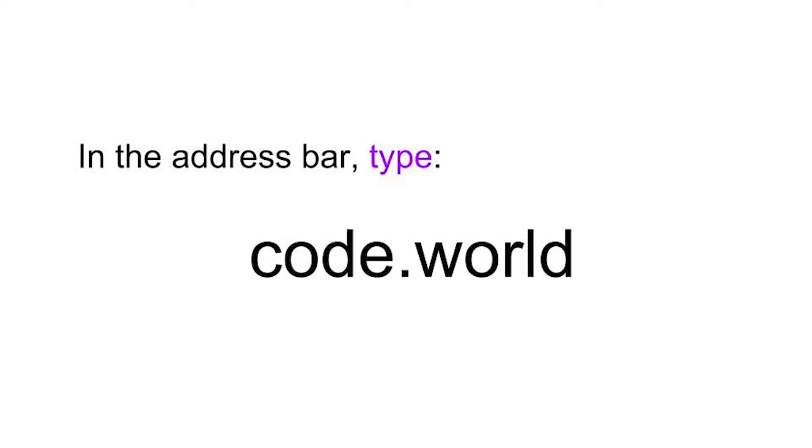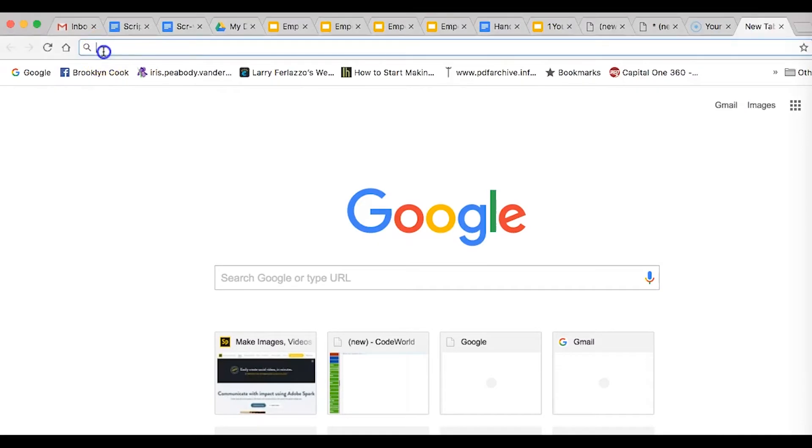Lesson one is going to be on functions and parameters. By the end of this video, you'll be able to write your first program. First, open up a tab and type in code.world. You don't need .com, .org, or anything else. Just code.world.